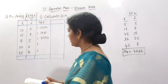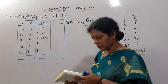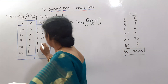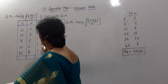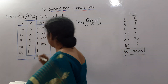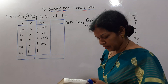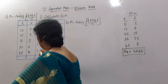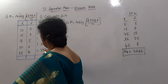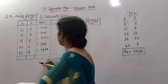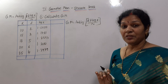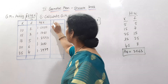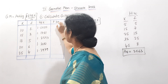Log of 20 is 1.3010. Log of 25 is 1.3979. Now we need to compute frequency × log x, so the next column is f × log x.